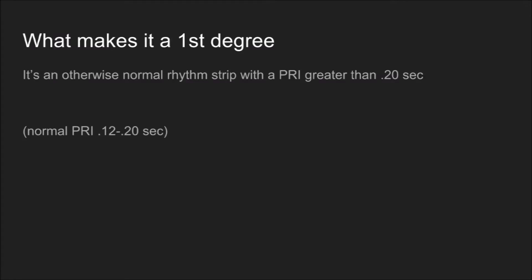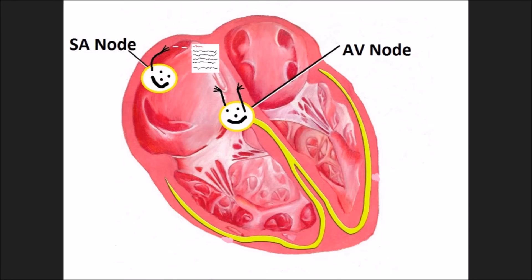So let's talk about how this works normally. Usually the SA node sends a message down to the AV node and says, "Hey, do you mind passing this on?" and the AV node says, "Sure, no problem, I got you." With a first degree AV block, on the other hand, the SA node is throwing that message and the AV node is saying, "Look, I'll get to it in a minute, but I'm kind of tied up right now." So more or less, that is how it works.